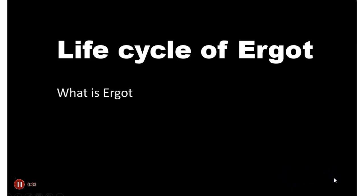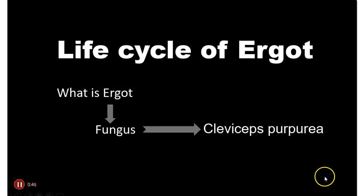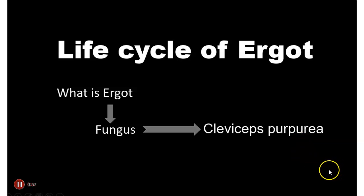What is ergot? Ergot is a fungus. Its scientific name is Claviceps purpurea. Ergot is a fungus and its scientific name is Claviceps purpurea. It is a parasite.